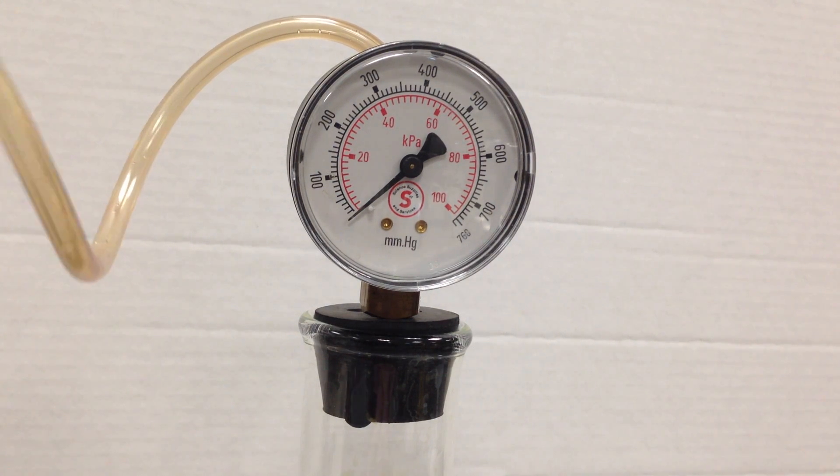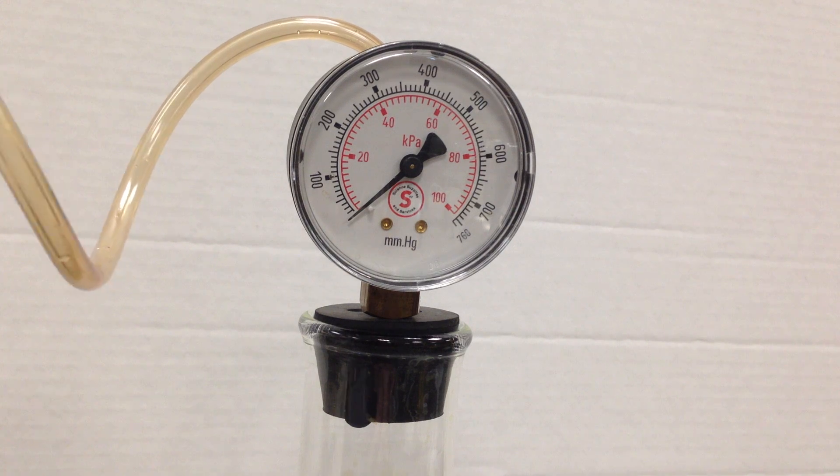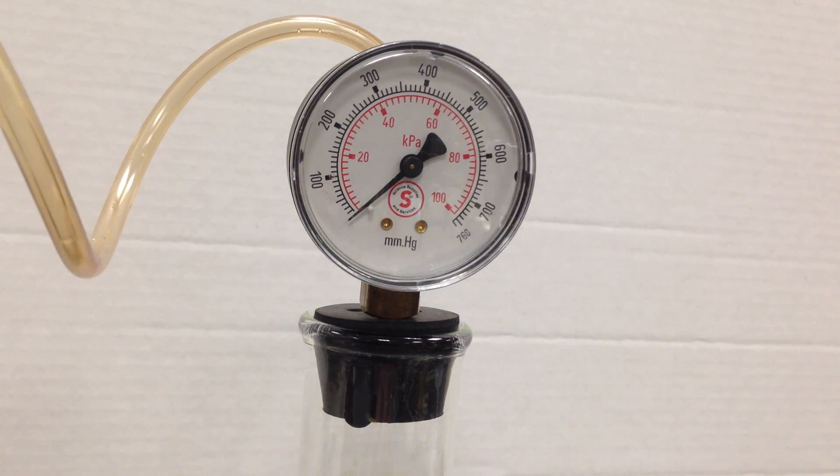But I'm guessing I should be pushing out 76 millimeters of mercury because 76 is a tenth of 760, right?